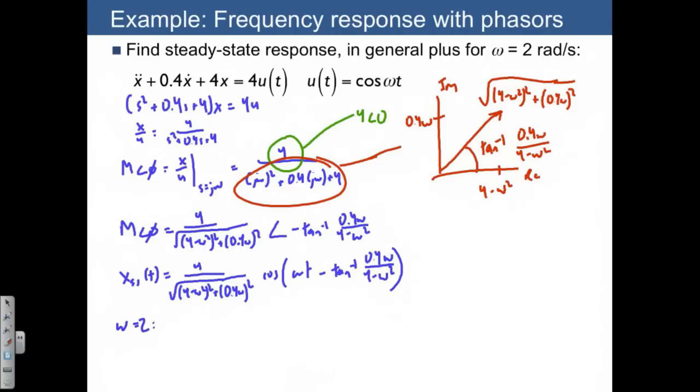Well, if we actually divide this out, notice that the 4 minus omega squared just disappears. So we end up with 0.4 times omega, which is 2. This gives us 0.8 squared. So this is going to be 0.8 squared square root, which is just going to give us 4 divided by 0.8.